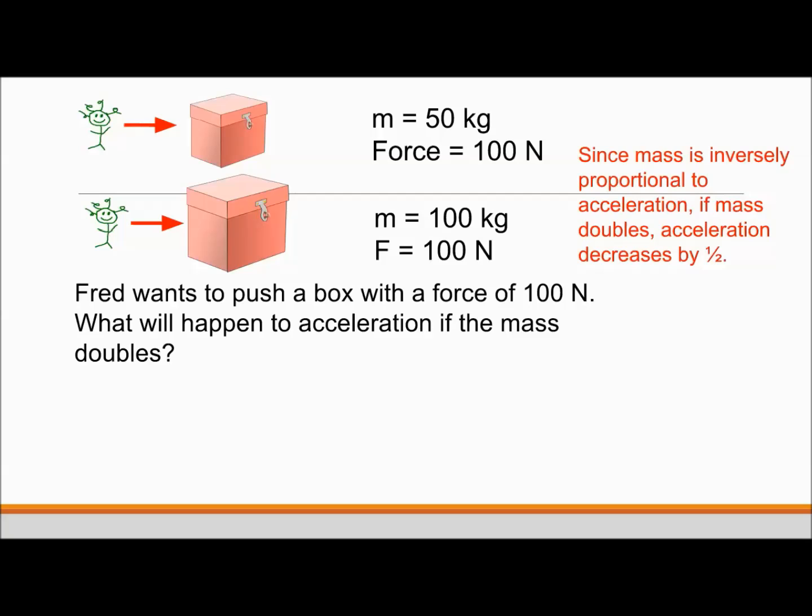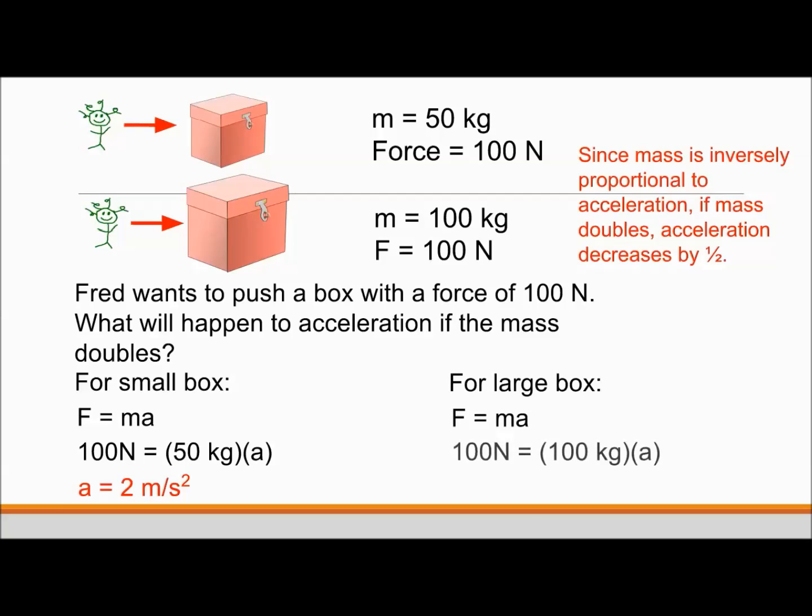Let's look at it mathematically. For a small box, force is equal to mass times acceleration. We can solve for acceleration for the first box, and we get a equals 2 meters per second squared. For the larger box, we can do the same thing. And we get a equals 1 meter per second squared. And our mathematical answer matches our theoretical prediction that acceleration was decreased by one-half.